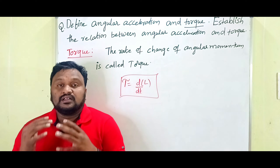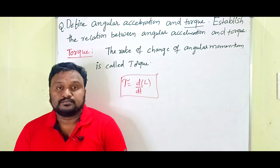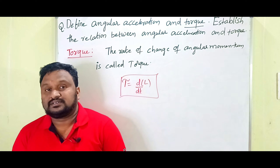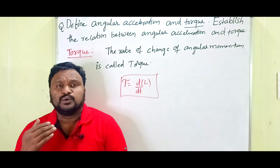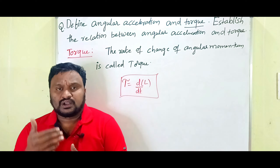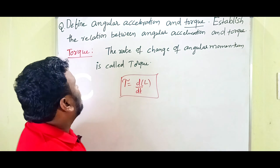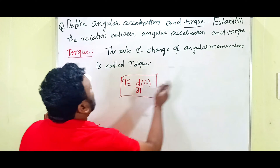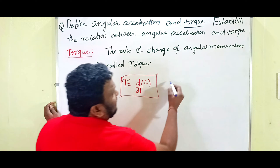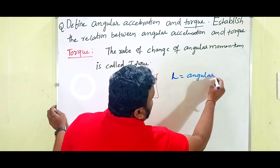The rate of change of angular momentum is called torque. This is nothing but Newton's second law in rotational motion. The formula is: τ = dL/dt. Here, torque tau (τ) equals the rate of change of angular momentum L.